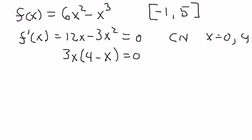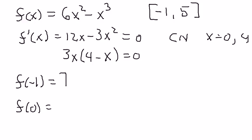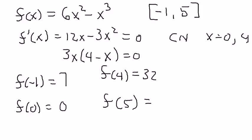Now I need to calculate four values. Zero and four both fall in the interval between negative one and five. I calculate f(negative one) by plugging negative one into the original equation, and I get seven. I calculate f(0) and get zero. I calculate f(4) and get thirty-two. For the other endpoint, f(5), I get twenty-five. The absolute minimum occurs at x equals zero, and the absolute minimum value is zero. The absolute maximum on the interval from negative one to five occurs at x equals four, and the absolute maximum value is thirty-two.